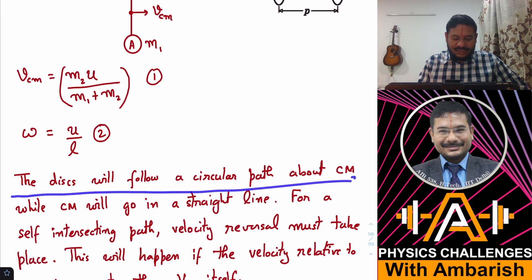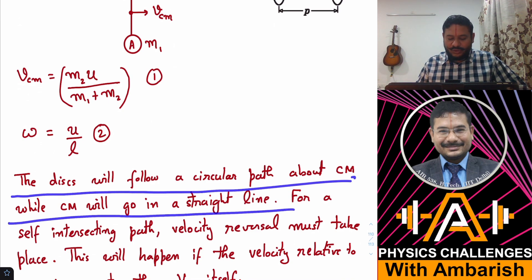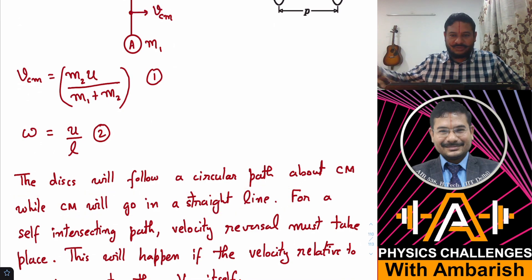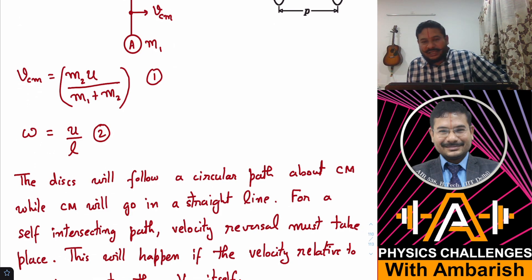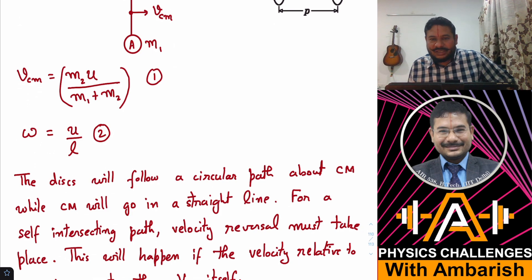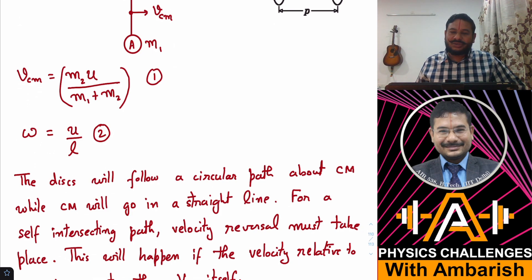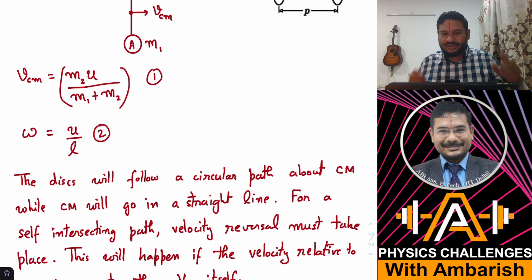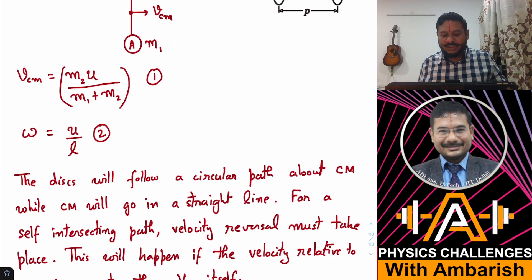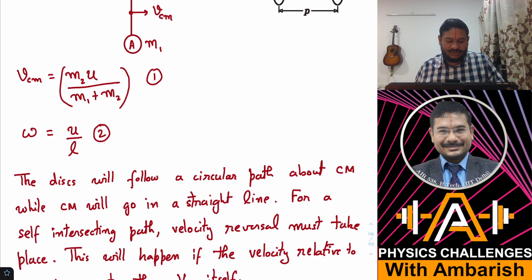The disks will follow a circular path about the center of mass, while the center of mass goes in a straight line — obviously there's no external force so the center of mass must move in a straight line. From the center of mass frame, which is an inertial frame, the blocks will move with constant angular velocity about the center of mass.